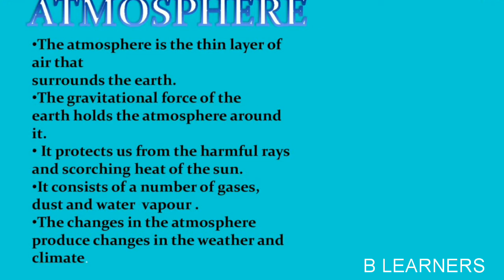The atmosphere protects us from the harmful ultraviolet rays of the sun. Air is a mixture of gases, dust particles, and water vapor. Among all the gases, nitrogen is the most abundant, forming around 78% of the atmosphere. Oxygen makes up 21% by volume, and carbon dioxide is only 0.03%. These gases are very important for various organisms — oxygen is important for us, carbon dioxide is important for plants, and nitrogen is also taken up by green plants to maintain their growth.